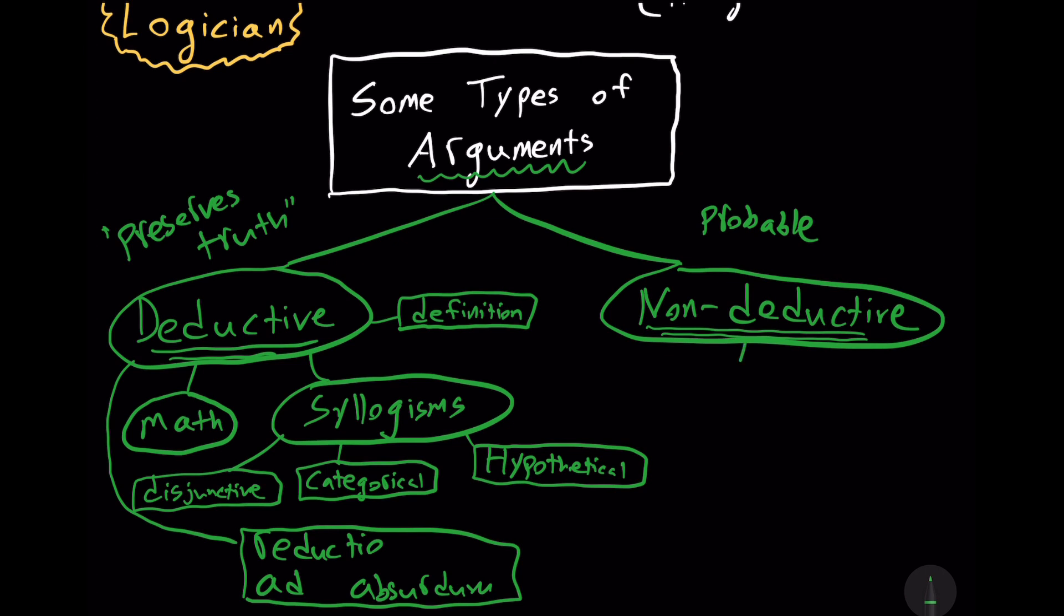First off, we can think of induction. Now, sometimes non-deductive arguments are all called inductive arguments. I think that's using too broad a definition of the term induction, in my opinion. But in an induction argument, we're generalizing from particular cases. So if I see that this person is mortal, this person is mortal, this human is mortal, this human is mortal, so therefore all humans are mortal, we've engaged in an inductive argument. We've generalized from particular cases to reach a sweeping, general, universal conclusion.